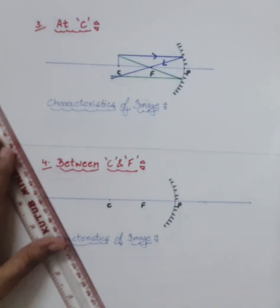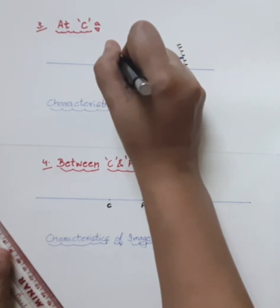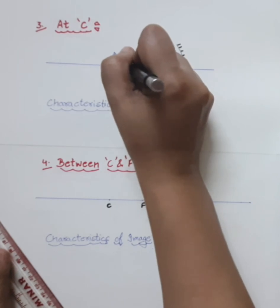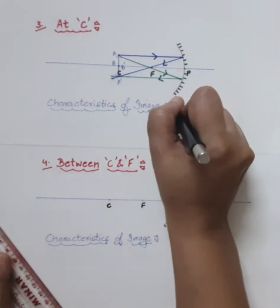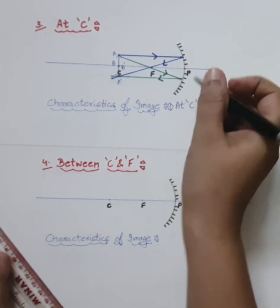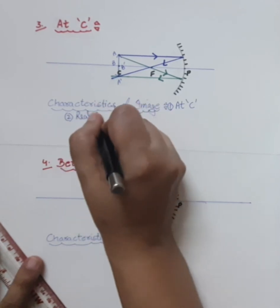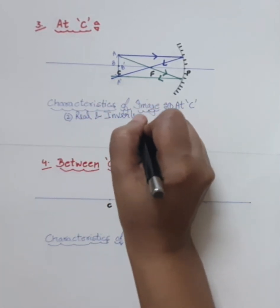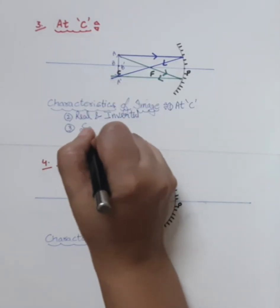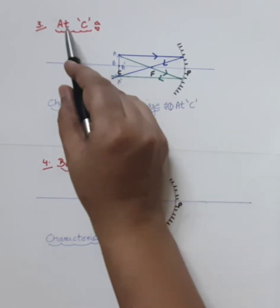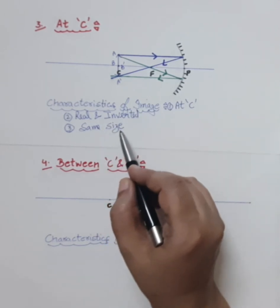The two rays meet just below C, so draw the image there. Label the object AB and image A'B' with arrows. The image is formed at center of curvature. It is real and inverted. The size is the same as the object — equal size. The special feature of this case is that both object and image are formed at C and are the same size.